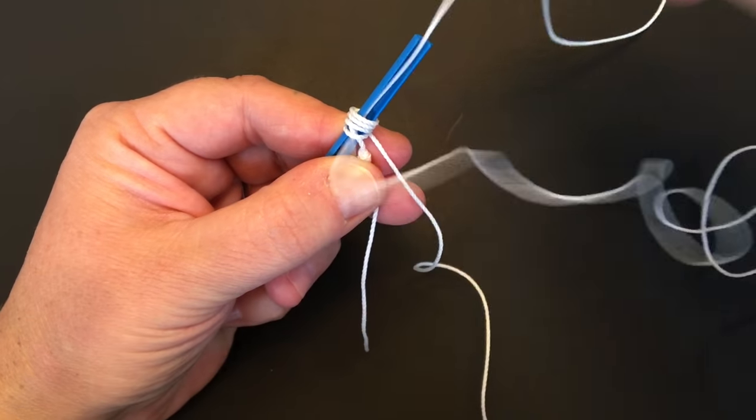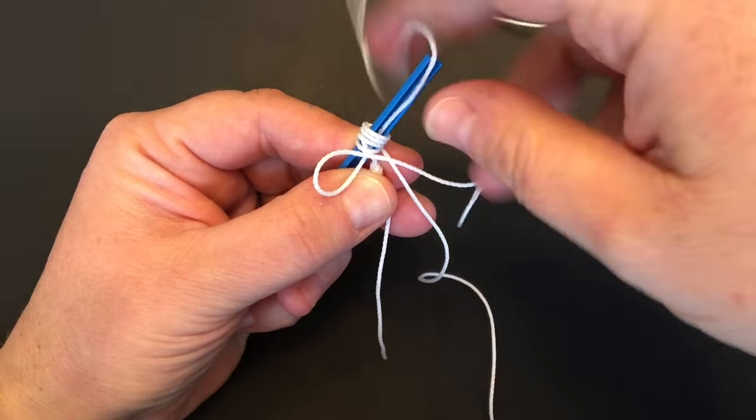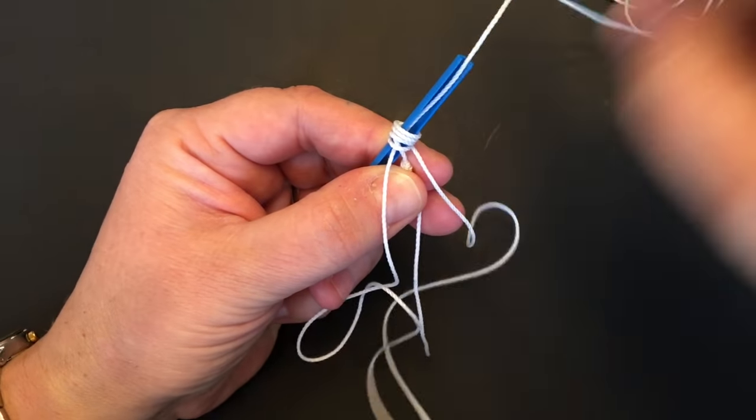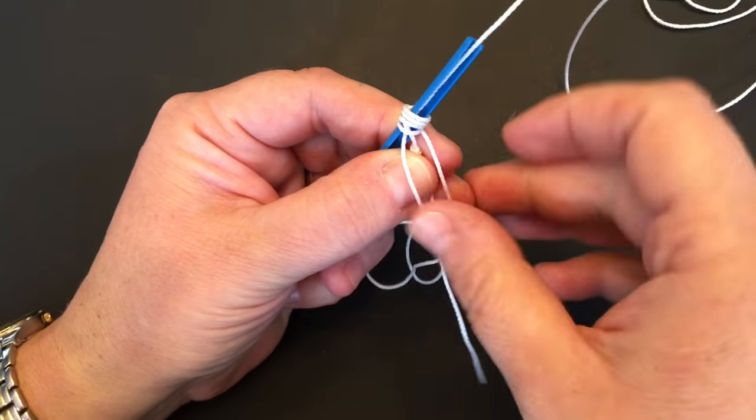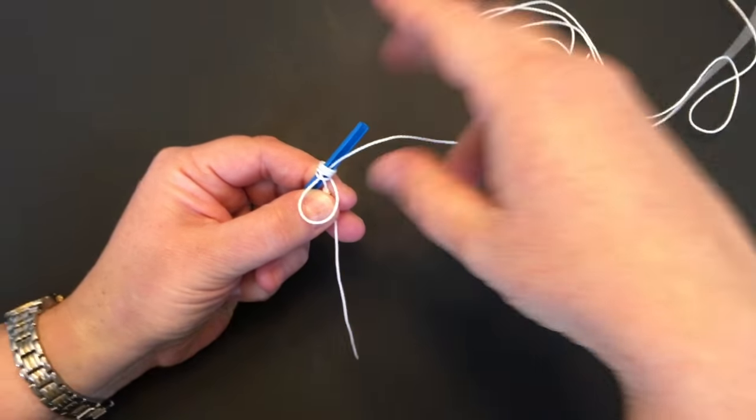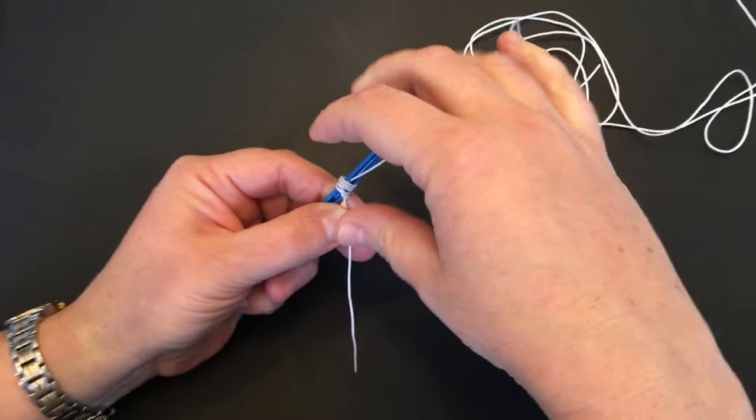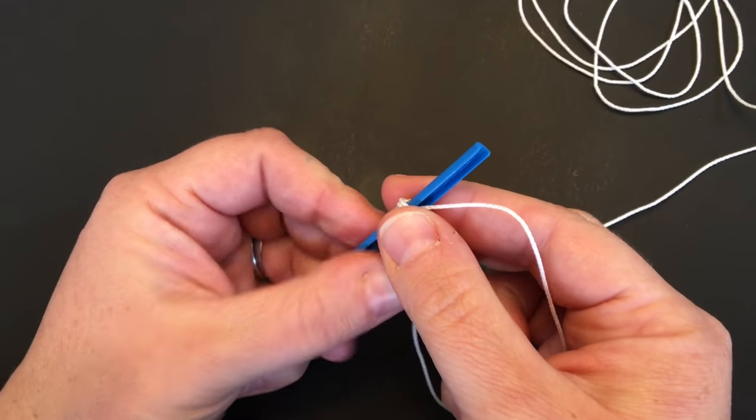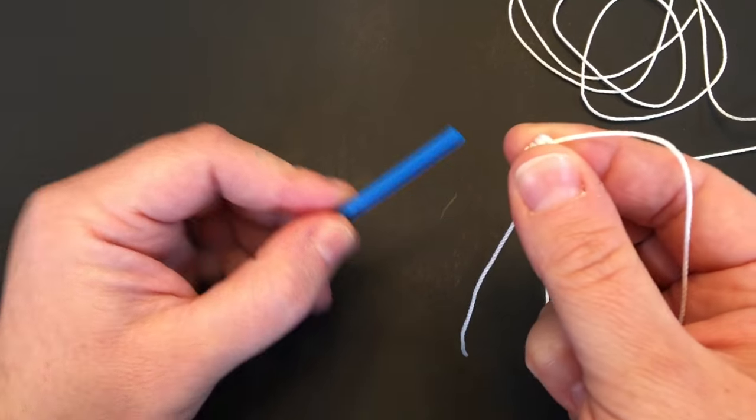Pull all the slack out of the cord, slide the knot off the end of the tool.